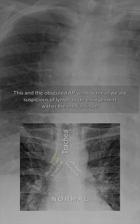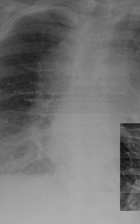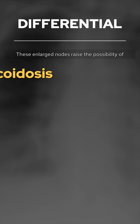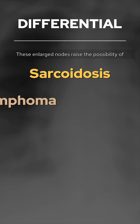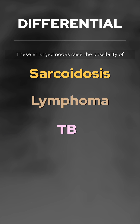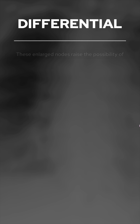This and the obscured AP window mean we are suspicious of lymph node enlargement within the mediastinum. These enlarged nodes raise the possibility of sarcoidosis, lymphoma, and TB.